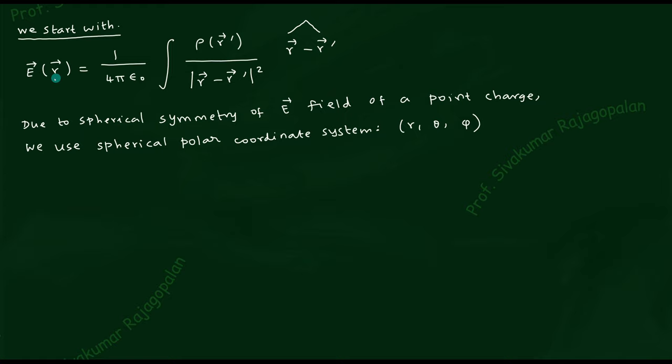The primed coordinates represent the region where the charges are present, while unprimed coordinates represent the location where we calculate the electric field — the region where charges are not present. The hat symbol represents the unit vector in the direction of (r − r′), so you find the unit vector for that particular vector.